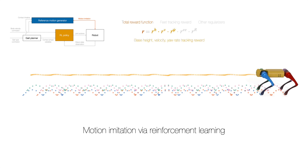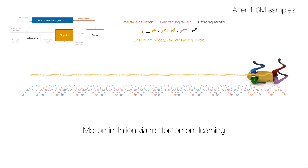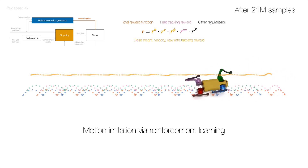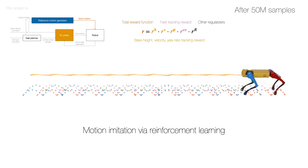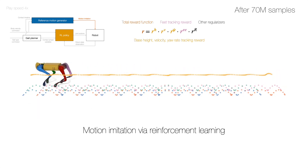The policy is trained using a reward signal that includes terms for matching the body height, linear velocity, yaw rate, and the robot's relative foot positions to the reference, along with a minor regularization term. By leveraging realistic simulation data that reflects whole-body dynamics, RL effectively overcomes the inherent limitation in reference motions due to modeling simplifications.